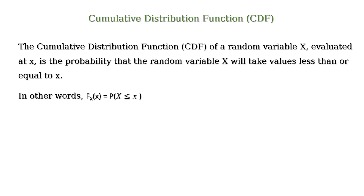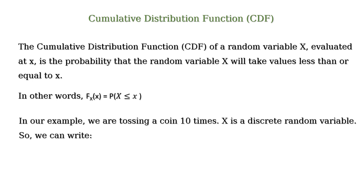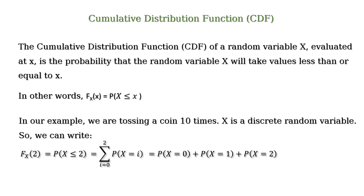So in our example we are tossing a coin 10 times and x is a discrete random variable. So we can write F(2) = P(X ≤ 2) = summation i equals 0 to 2 of P(X = i), which equals P(X = 0) + P(X = 1) + P(X = 2).